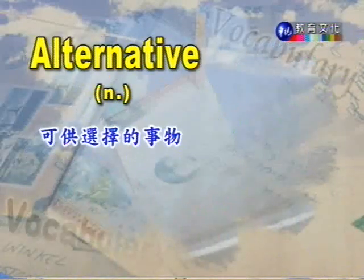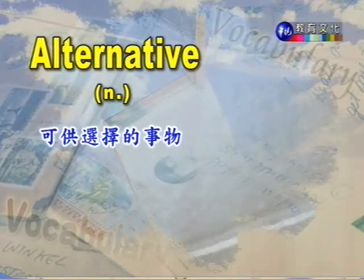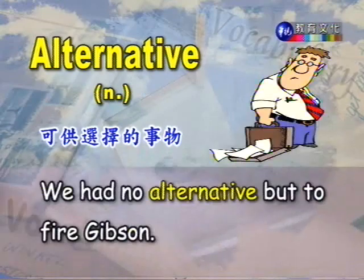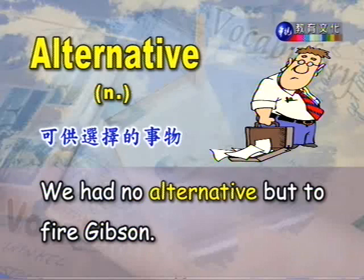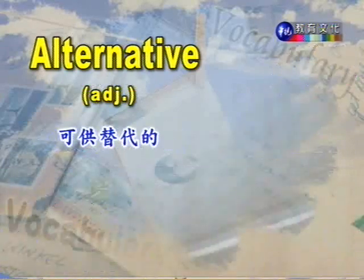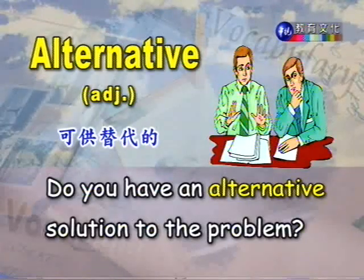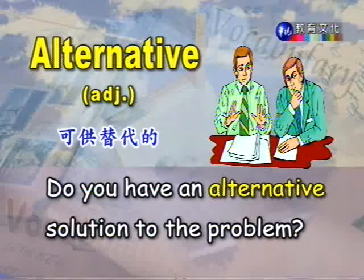下面一个单字是alternative，可以作为名词，也可以作为形容词。名词用法：可供选择的事物、选择。例句：We had no alternative but to fire Gibson. 我们没有别的选择，只能够辞退他。形容词用法：可供替代的。例句：Do you have an alternative solution to the problem? 你有没有别的办法来解决这个问题？